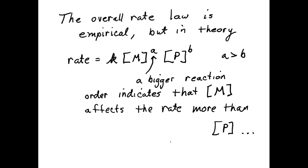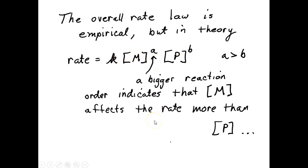The overall rate law is empirical, so we have to find it from laboratory data. But in theory, the exponents, or reaction orders, are going to be higher if the rate depends more on that concentration. If A is bigger than B, that means the rate depends more on the concentration of M than on the concentration of P. Keep that in mind, because when we look at the elementary steps and try to figure out the rate of each one, we're going to use those coefficients.